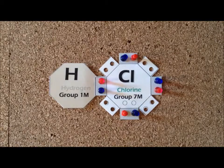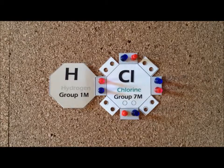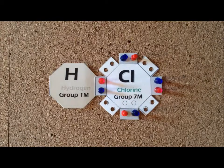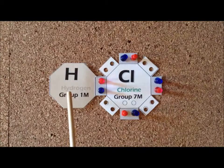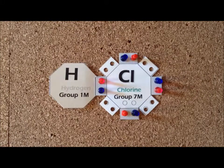Hydrogen contributes one valence electron, and chlorine contributes seven valence electrons. So we have eight valence electrons to distribute throughout the compound. We can satisfy the duet and octet rules by forming a single bond between hydrogen and chlorine, which takes up two of the electrons. The other six electrons are put into three lone pairs on chlorine.